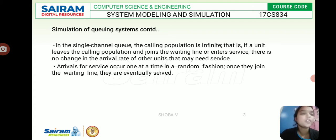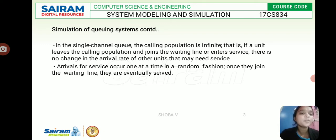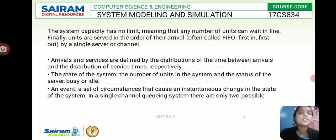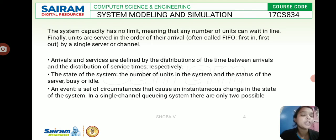In a single channel queue, the calling population is infinite. If a unit leaves the calling population and joins the waiting line or enters service, there is no change in the arrival rate of other units. Arrivals occur one at a time in a random fashion, based on a probability distribution. The system capacity has no limit, meaning any number of units can wait in a line. Units are served in order of arrival — first in, first out — by a single server or channel.